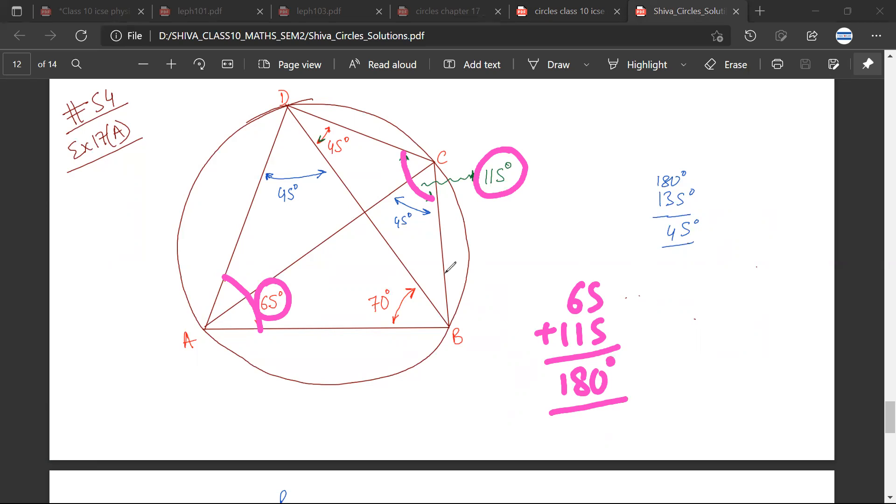This is one of the properties of cyclic quadrilateral that we used. The second property that we used was that if this is a common chord, then the angle which is subtended at the circumference would be equal. So both the angles are 45 degrees. Mr. CB, do we agree? Yes, sir. Great, sir.